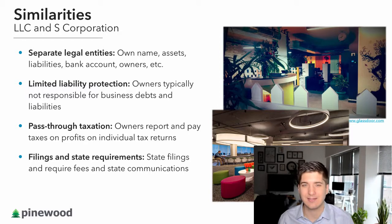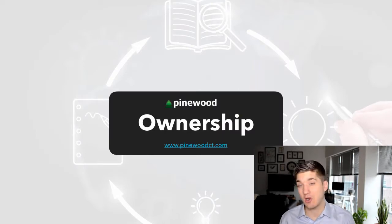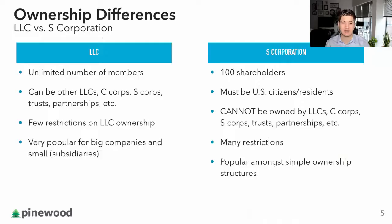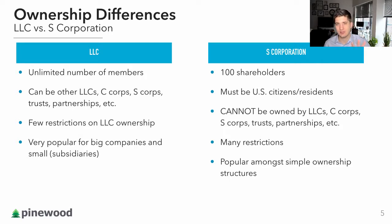They both have filings and state requirements and other communications you need to file with your state. As far as ownership goes, this is where things get a little bit different. The LLC can have an unlimited number of members or owners. They can be LLCs, S corporations, C corporations, personal trusts — they can certainly be individuals here in the US or overseas. There are really few restrictions on LLCs.